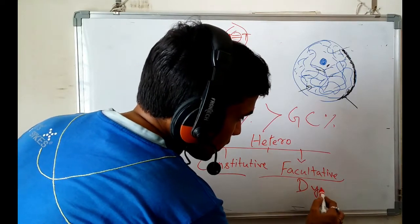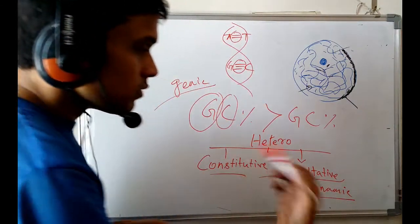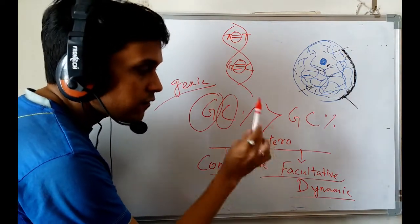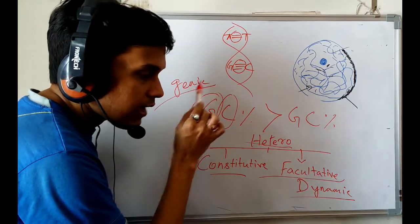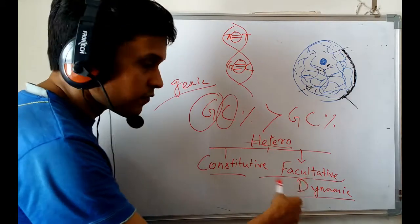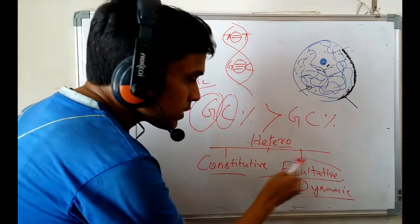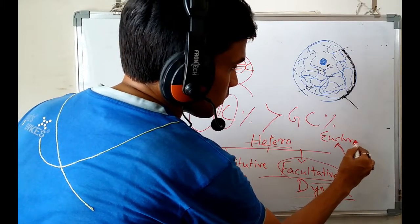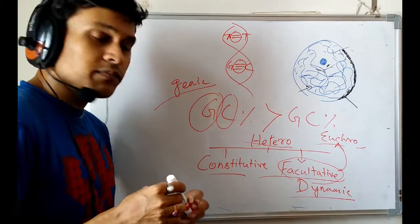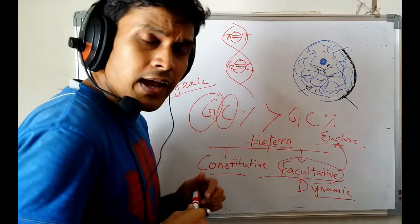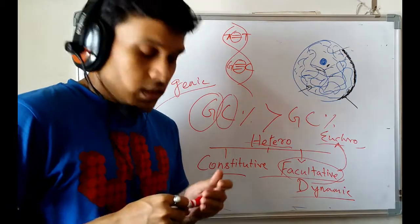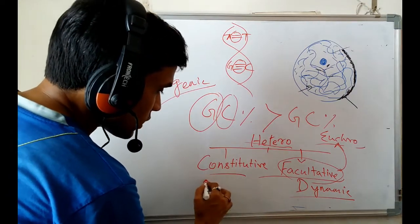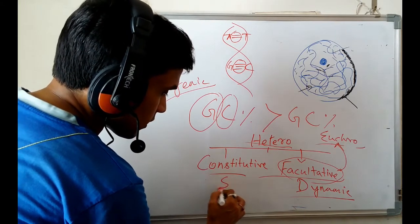Facultative heterochromatin is dynamic in nature. In some phases of the cell cycle or some phases of life, it will behave like heterochromatin, and in other phases it will become euchromatin — through histone modifications and related mechanisms, which I will discuss in my epigenetics class. Constitutive heterochromatin, on the other hand, is totally inactive and static — it is always in the condensed state.